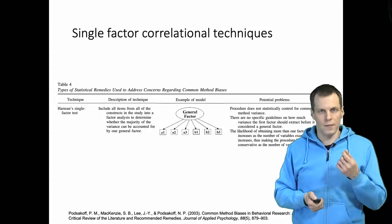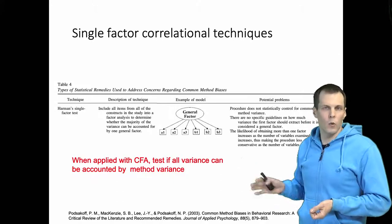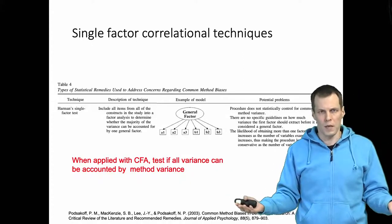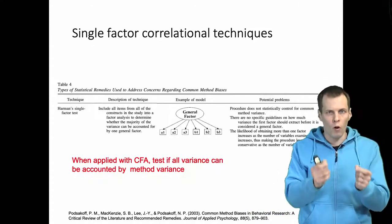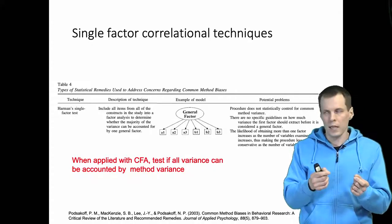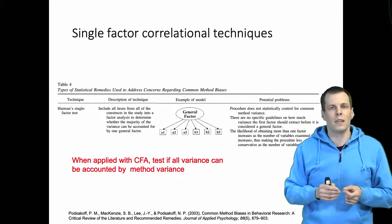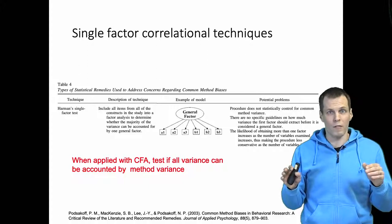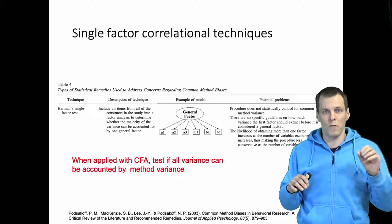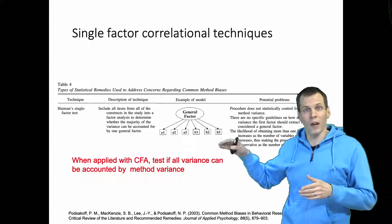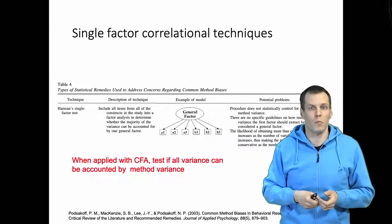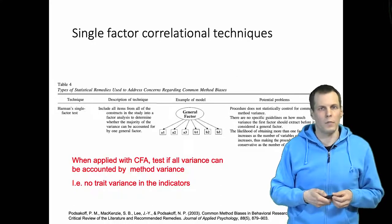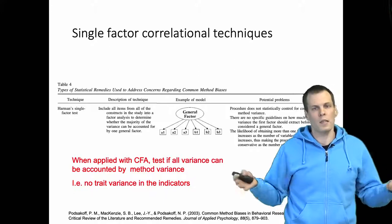There is a particularly problematic variant where this technique is applied using confirmatory factor analysis. Researchers check the model fit indices and conclude that the model doesn't fit well. But what is the null hypothesis being tested? It is that the method factor explains all covariation of the items — in other words, there is no construct-related variance whatsoever and it is purely method variance. That is an extreme case. If you have 40 percent construct variance and 20 percent method variance, that would already be problematic, so you don't need 100 percent method variance for it to be a problem. This CFA approach tests for no trait variance, and Podsakoff's paper also says it is commonly used but not useful.